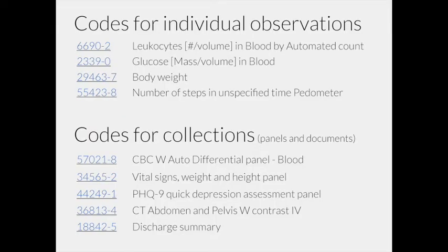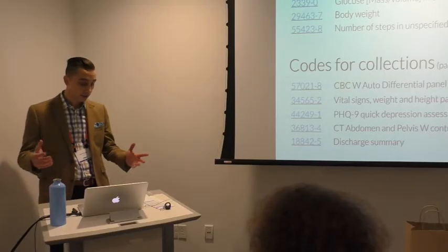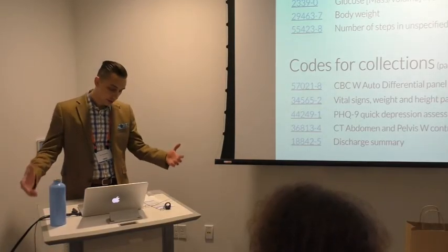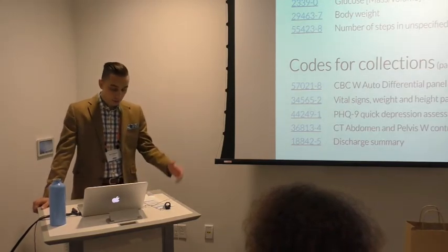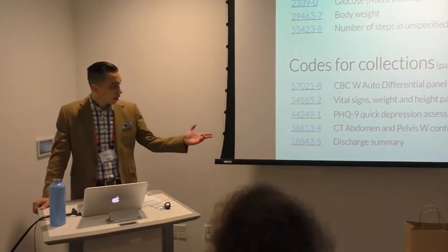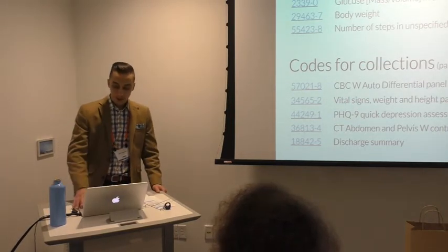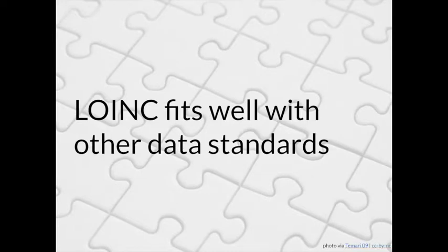LOINC defines codes for individual measurements — body weight, glucose, blood, and so forth — but also defines codes for collections of those observations. We describe two kinds of collections: a panel, which has enumerated contents like a CBC; and more loose collections such as a document. LOINC has codes representing, for example, a CT of the pelvis radiology imaging study report or a hospital discharge summary.